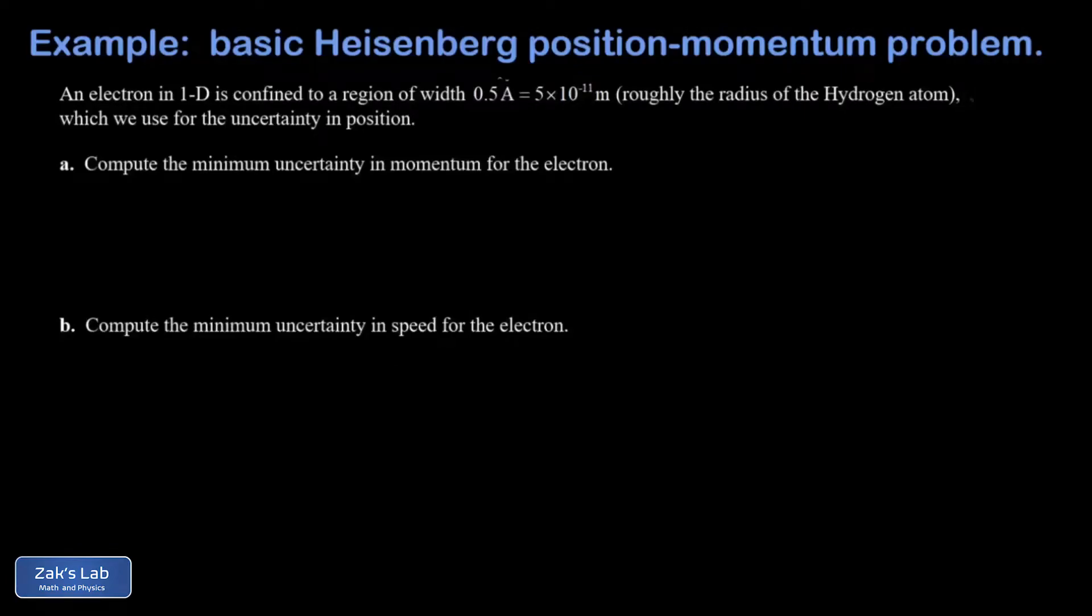In this video, we're doing the most basic Heisenberg uncertainty principle calculation in introductory physics. We're looking at the position-momentum uncertainty relation. An electron in one dimension is confined to 0.5 angstroms as the uncertainty in position. We're trying to find the uncertainty in momentum in part A and the uncertainty in speed in part B.